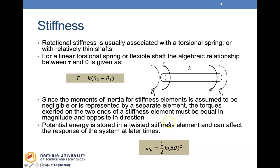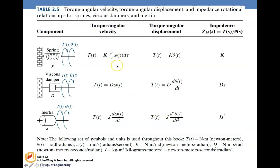We now look at the relationship between torque and angular velocity, torque and angular displacement, and the impedances when taking the Laplace transform of the various elements. For a spring, the torque-angular displacement relationship is T equals K times displacement. For the torque-angular velocity relationship, you integrate omega to get angular displacement, so torque equals K times the integral from zero to t of omega(t) dt. The impedance for a torsional spring is K/s.